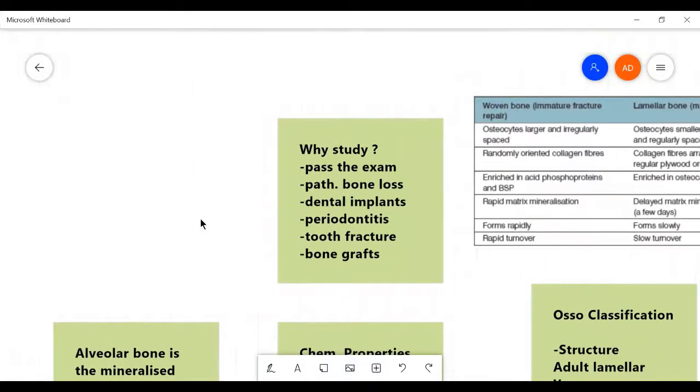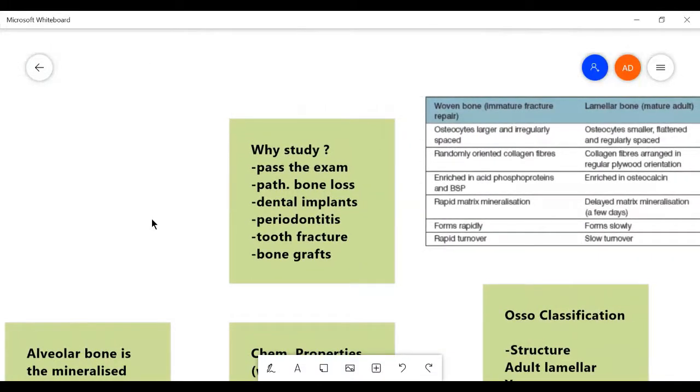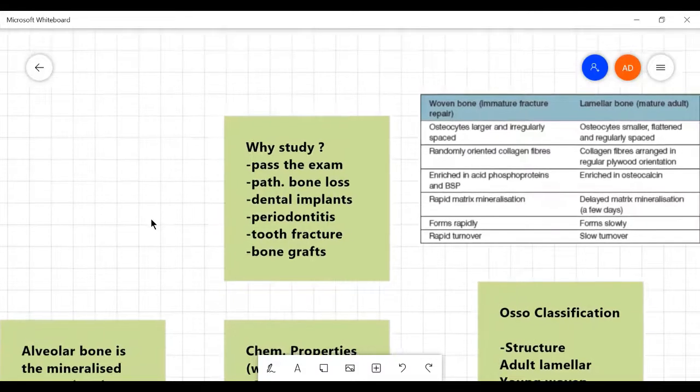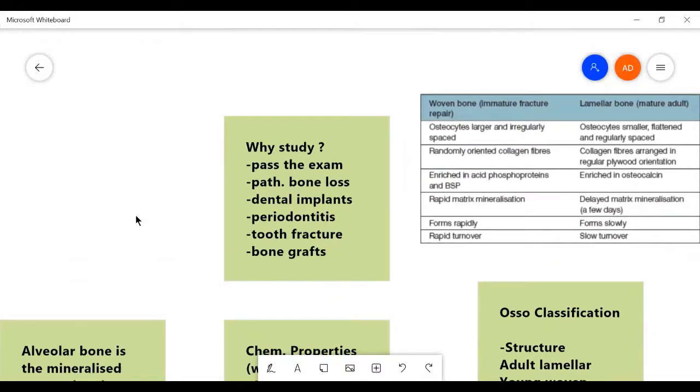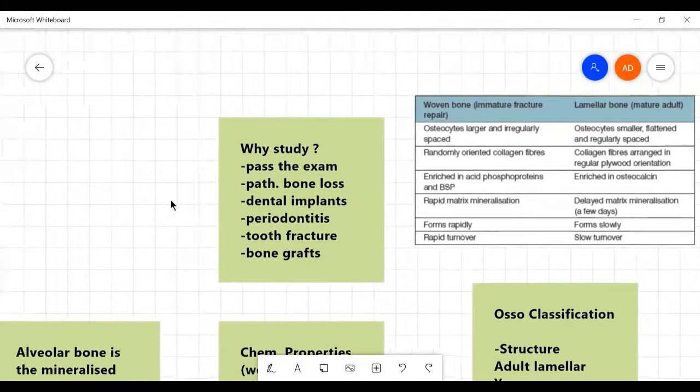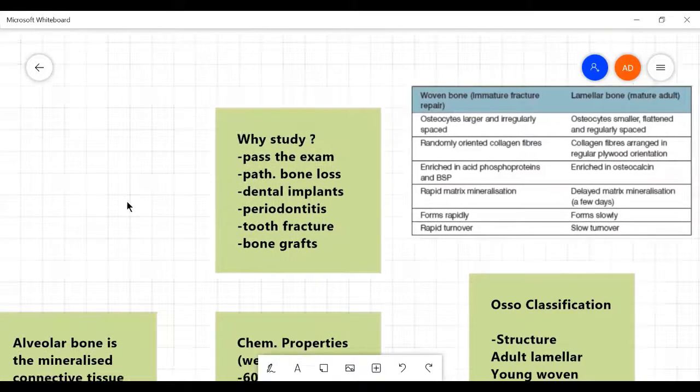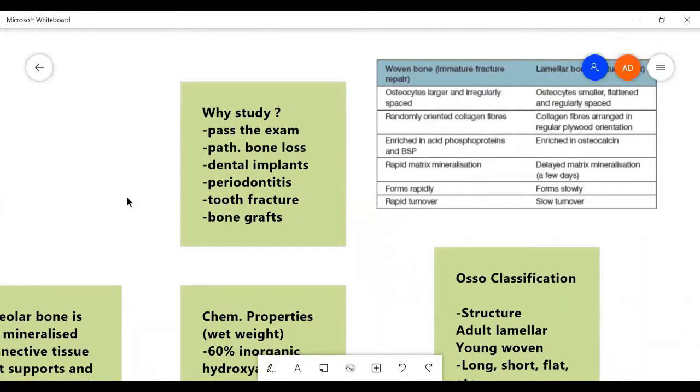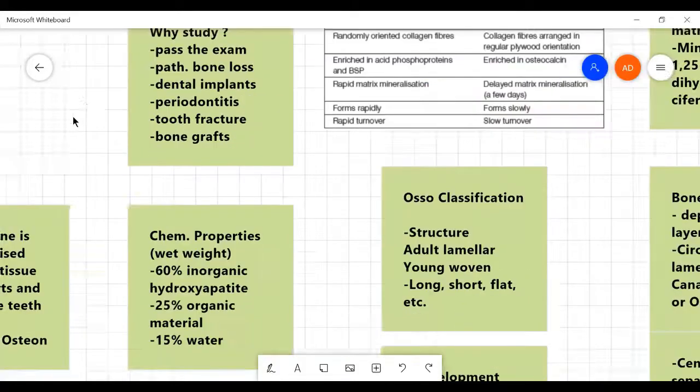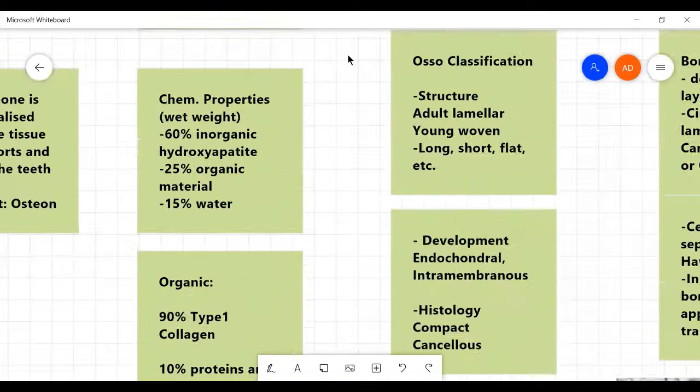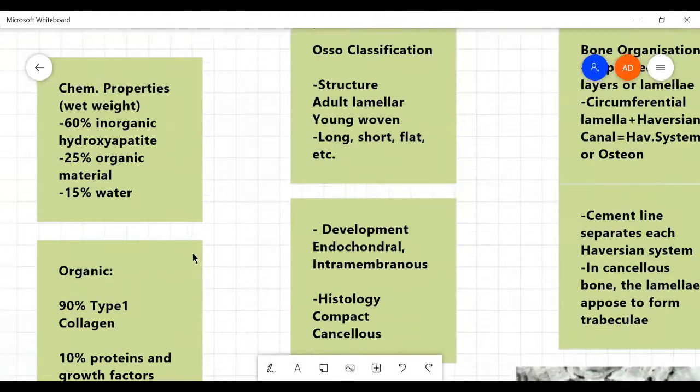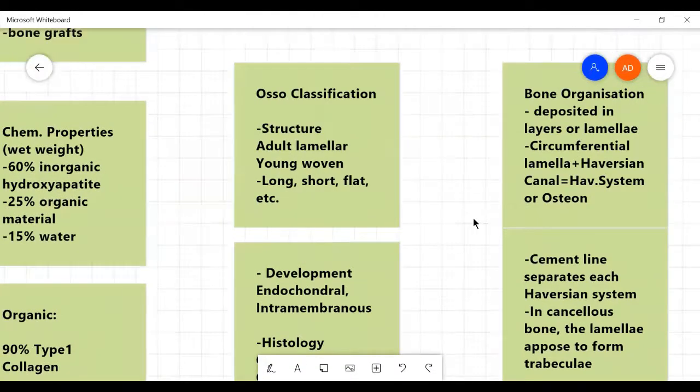Why do we study? Why do we go to all the trouble of doing this stuff? We need to know about pathological bone loss. There might be decay in the tooth that causes bone loss. Dental implants can cause bone loss. Periodontitis can cause bone loss. Tooth fracture, we need to repair tooth fractures as dentists. And we need to know how to graft bone as part of surgical procedures to heal the patient.